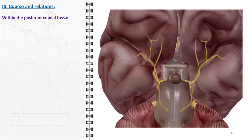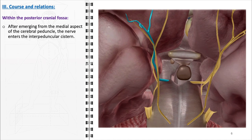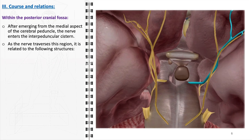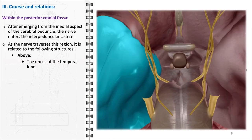Within the posterior cranial fossa, the journey of the oculomotor nerve showcases its intricate relationship with various significant neuroanatomical structures. After emerging from the medial aspect of the cerebral peduncle, the nerve enters the interpeduncular cistern, a fluid-filled space that is part of the subarachnoid space surrounding the brain. As the oculomotor nerve traverses the interpeduncular cistern, it is positioned in close proximity to several critical structures. Above the nerve is the uncus of the temporal lobe. The proximity to the uncus is clinically relevant because herniation of the uncus, as seen in cases of increased intracranial pressure, can directly compress the oculomotor nerve, leading to characteristic clinical symptoms such as an enlarged, unresponsive pupil.